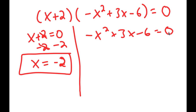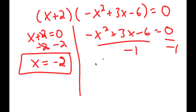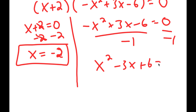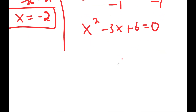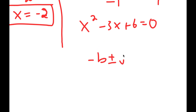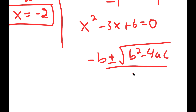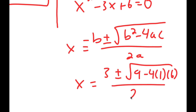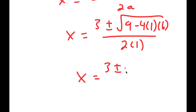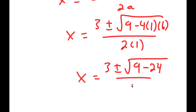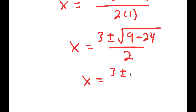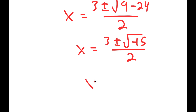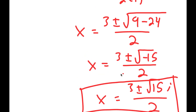For negative x squared plus 3x minus 6 equals zero, I divide both sides by negative one to get x squared minus 3x plus 6 equals zero. Using the quadratic formula — negative b plus or minus the square root of b squared minus 4ac all over 2a — I get 3 plus or minus the square root of 9 minus 24 over 2, which equals 3 plus or minus the square root of negative 15 over 2, which equals 3 plus or minus the square root of 15 times i over 2. So these are the two other solutions to the equation.